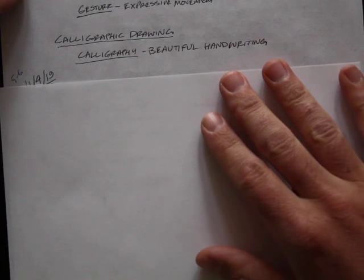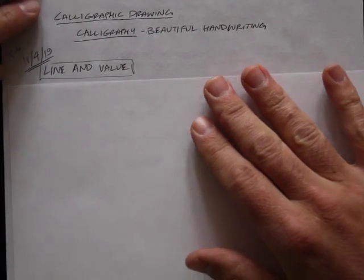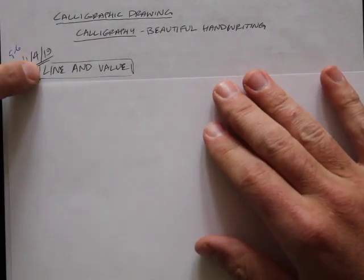All right, Art1, we are in the last section of Chapter 5, we're calling it 5-6, Line and Value.